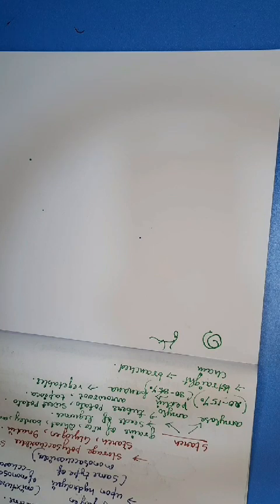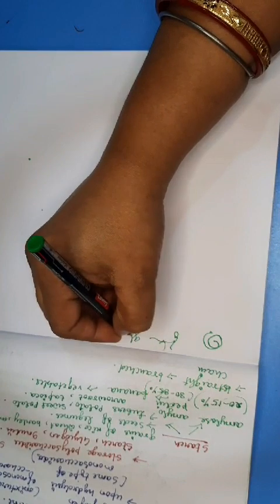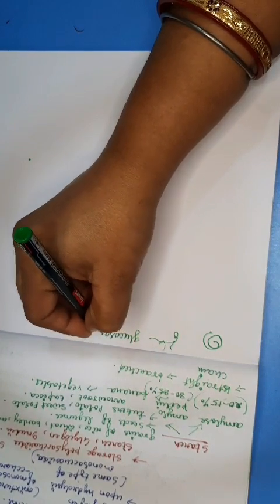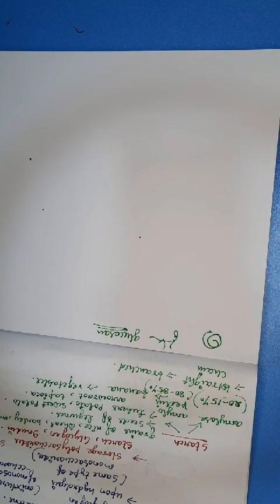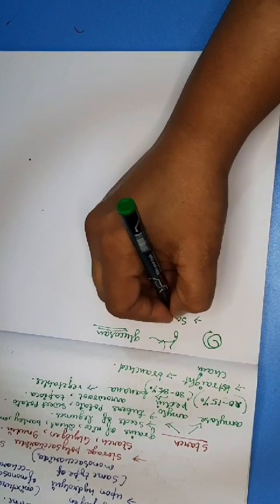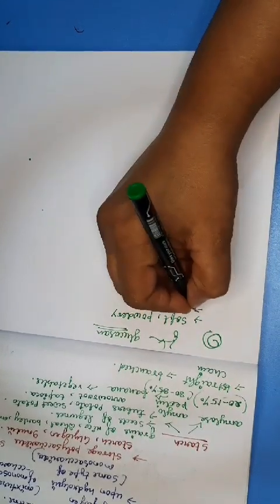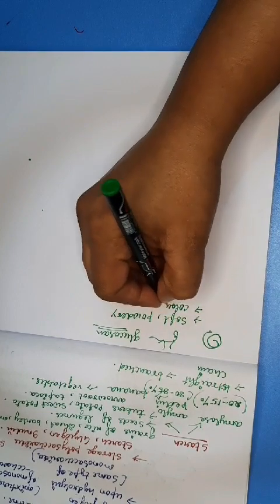Upon hydrolysis, starch yields only glucose molecules. Because of these repetitive glucose molecules, starch is also known as glucosan. Physically, starch is a white, soft, amorphous powder that lacks sweetness and is tasteless as well as colorless.